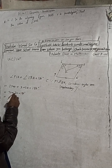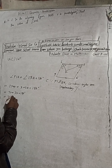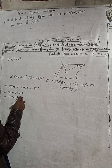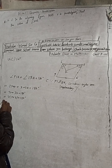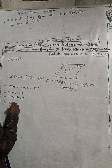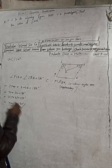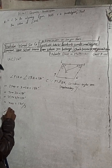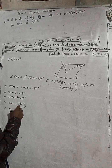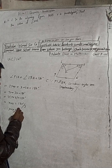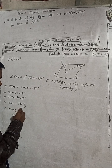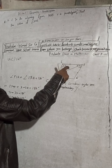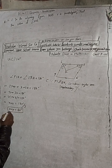We can take 3 as common, so 3 times (y plus x) equals 180 degrees. Therefore, x plus y equals 180 divided by 3, which gives us x plus y equals 60 degrees.